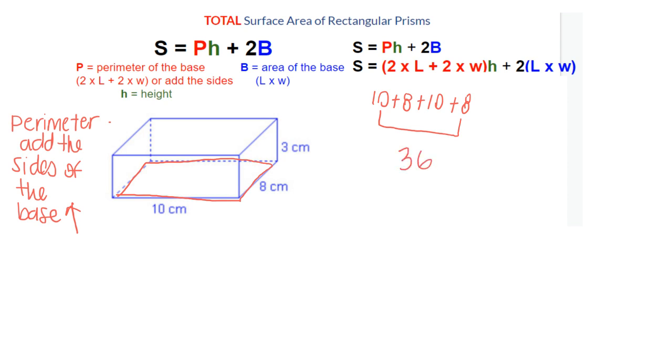Next, I'm going to multiply the perimeter of the base with the height according to the formula I'm using. So 36 is the perimeter of the base and the height is equal to 3. Right now, I'm just plugging in my formula.